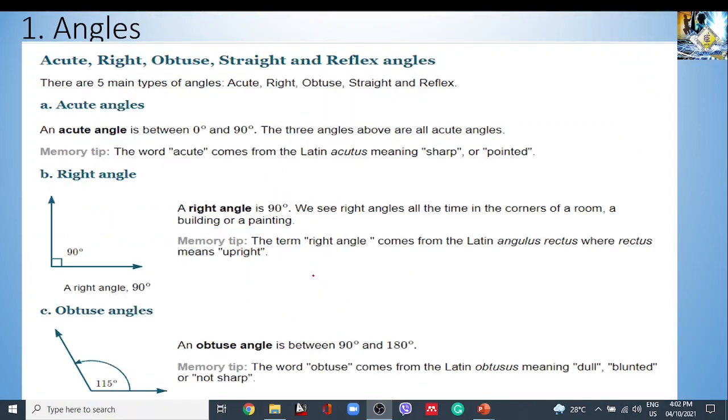So let's move to our next theory. Acute, right, obtuse, straight, and reflex angle. There are 5 main types of angle: Acute, right, obtuse, straight, and reflex. There are mnemonics and origins of this angle. Acute angles is between 0 to 90. So right triangle. The three angles above are all acute angles. So 0 to 90. So this is considered as acute angle 0 to 90.